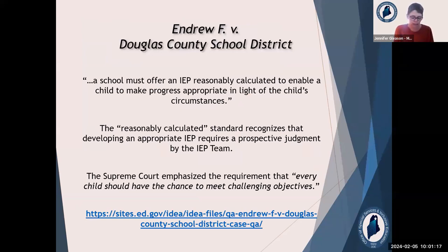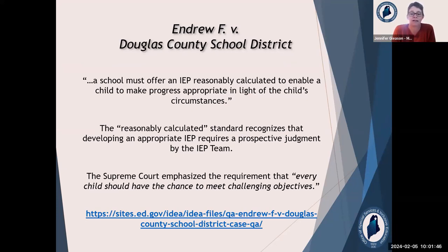We're going to start talking about the Andrew F. case. This was a case out of Colorado, around 2017-18. Andrew is a student who was in a public elementary school. He has autism, and all through elementary school his IEP pretty much stayed the same. He just wasn't making any progress at all. So right before his fifth grade year, his parents rejected the IEP and enrolled him in a private school that specializes in working with students with autism.